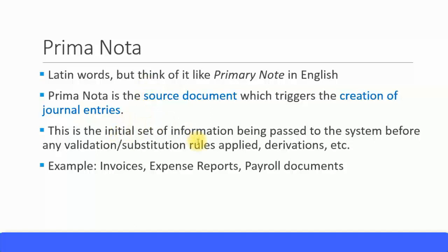Prima nota is the initial set of information being passed to the system before any validation, substitution, derivation, enhancement, or any type of rules are applied. So this is the initial set of information coming to the system — for example, invoices, expense reports, payroll documents. These kind of external documents — such as vendor invoices, customer invoices, expense reports from travel or expense reporting systems, and HR payroll documents coming into SAP — are all called prima nota.